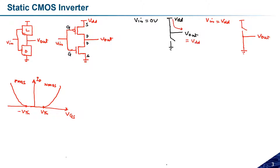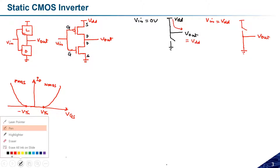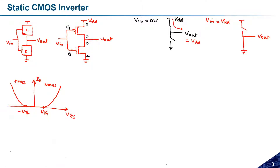In the second case, if we provide VIN equal to VDD, the NMOS transistor is in the on state and VOUT is discharged to ground, so VOUT will be zero volts.